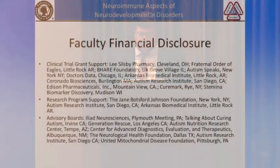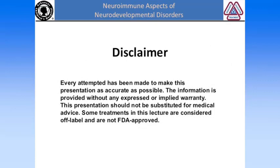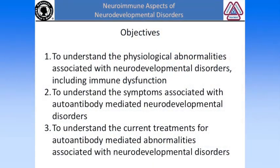It seems to be a growing area of interest and it's very important for finding treatments. These are my disclosures as far as support for our clinical trials, our research program, and advisory boards. Everything that I say here is made to be as accurate as possible, although there's no implied warranty. Some of the treatments I talk about today are not FDA approved, so most of them are used off-label. Our objectives: to understand the physiological abnormalities associated with neurodevelopmental disorders including immune dysfunction; to understand the symptoms associated with antibody-mediated neurodevelopmental disorders; and to understand some of the current treatments for auto-antibody-mediated abnormalities.